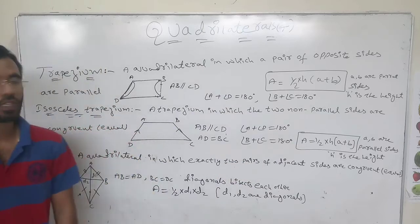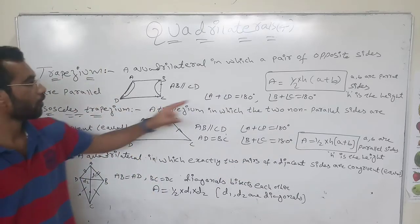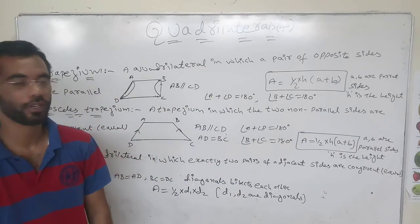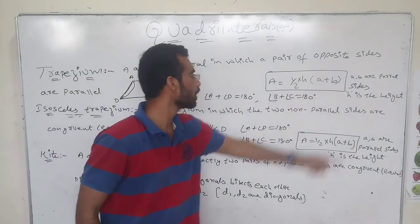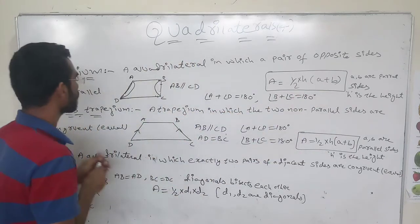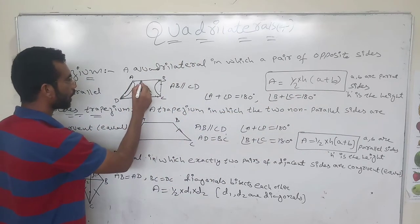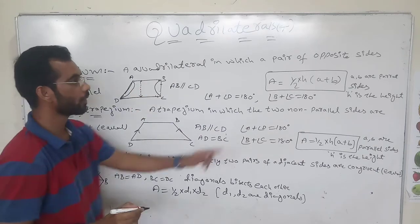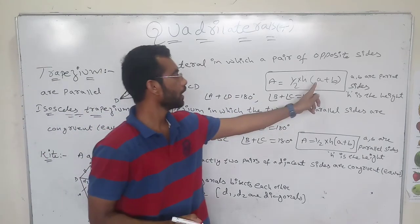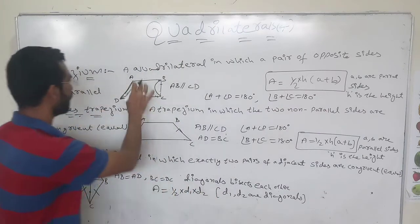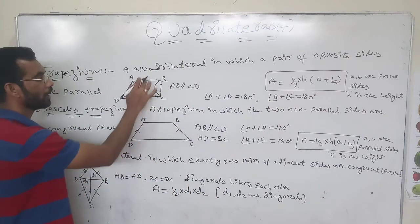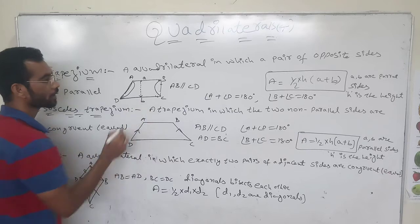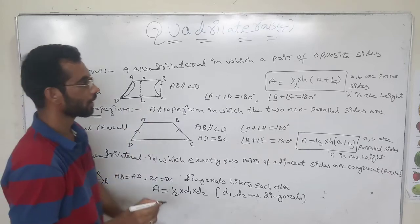Now, the area of the trapezium. The formula to find the area of a trapezium is: half into H into (A plus B), where H is the height and A and B are the parallel sides.